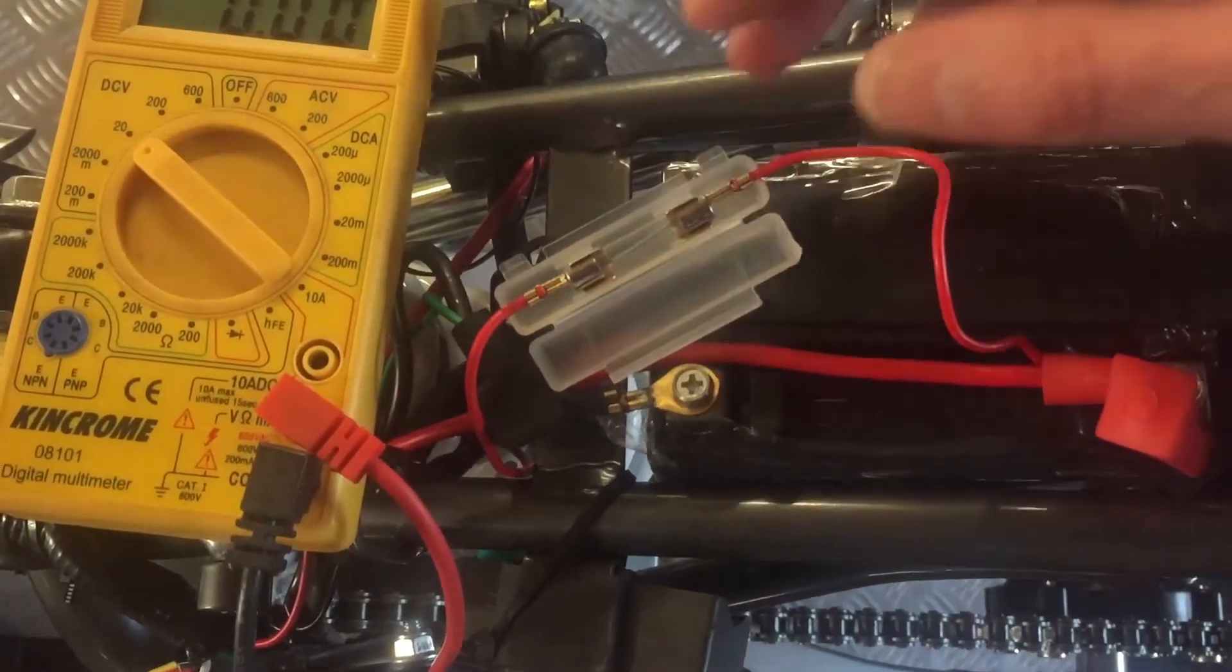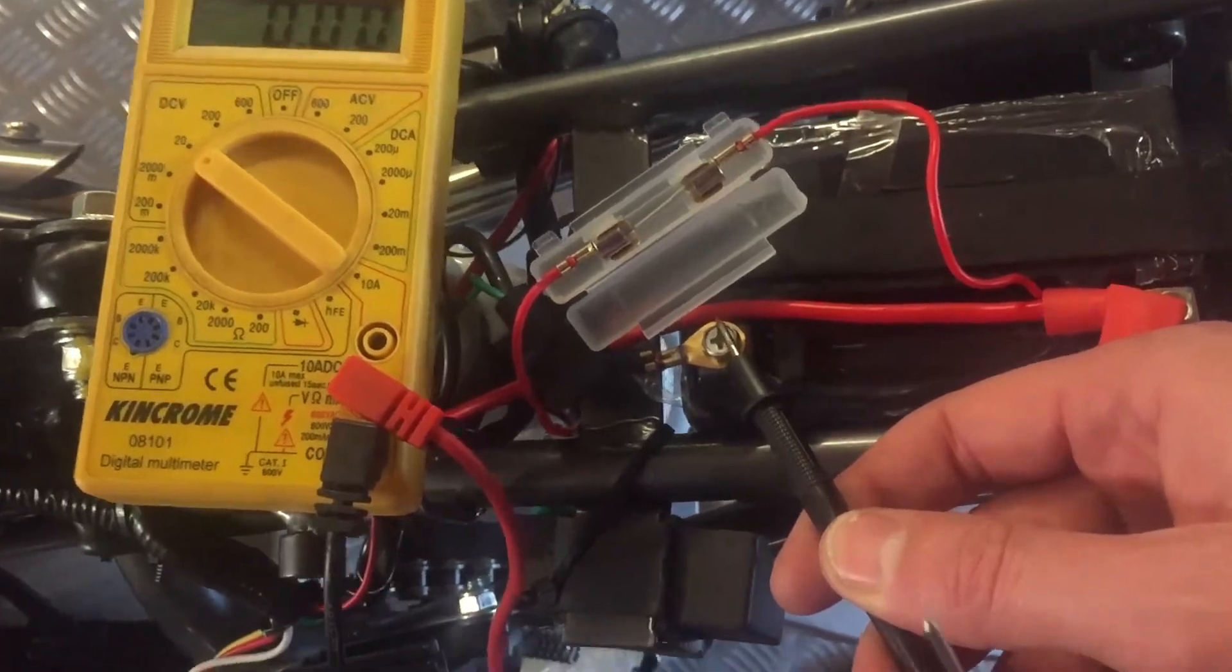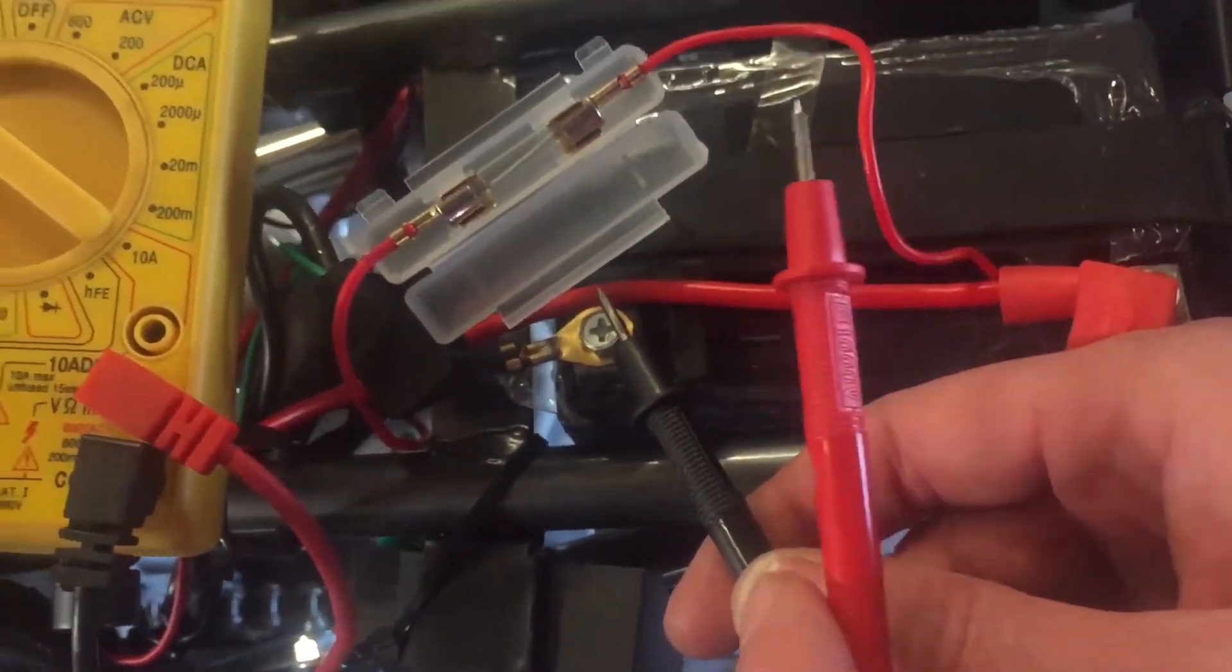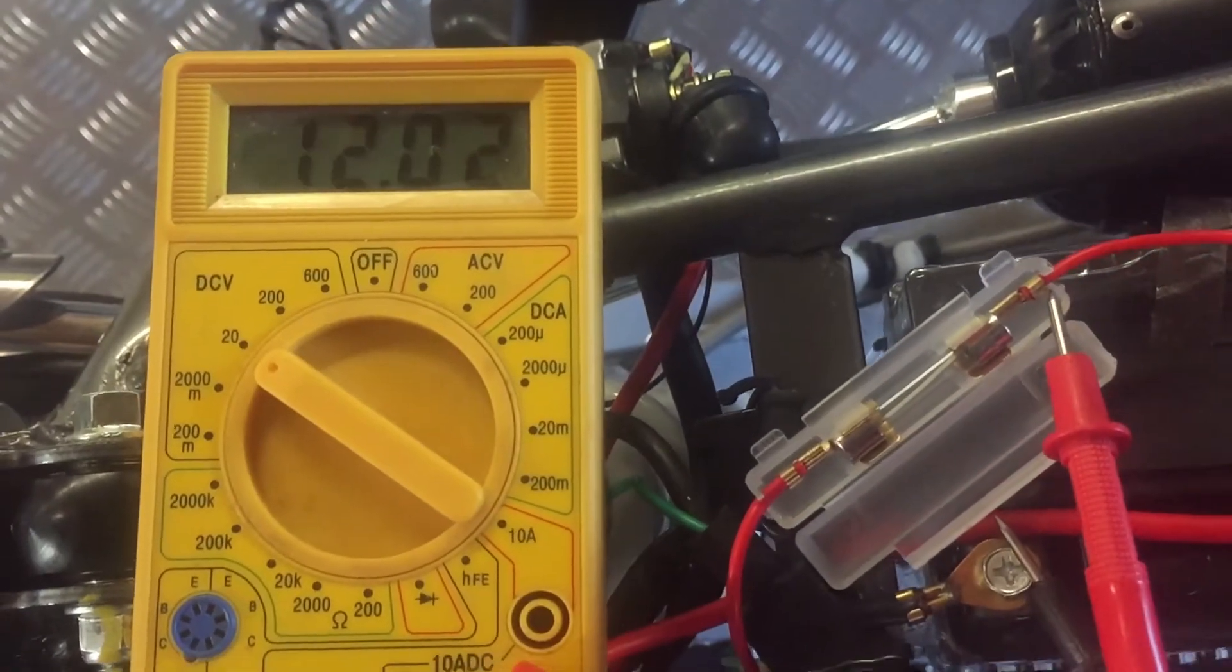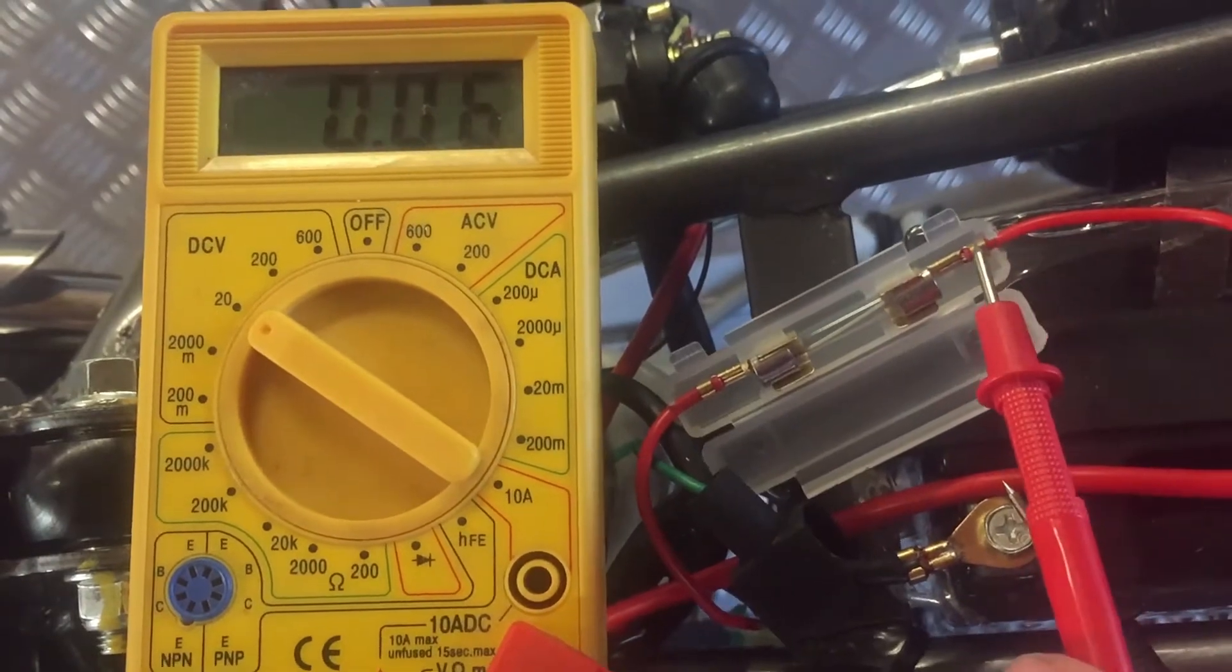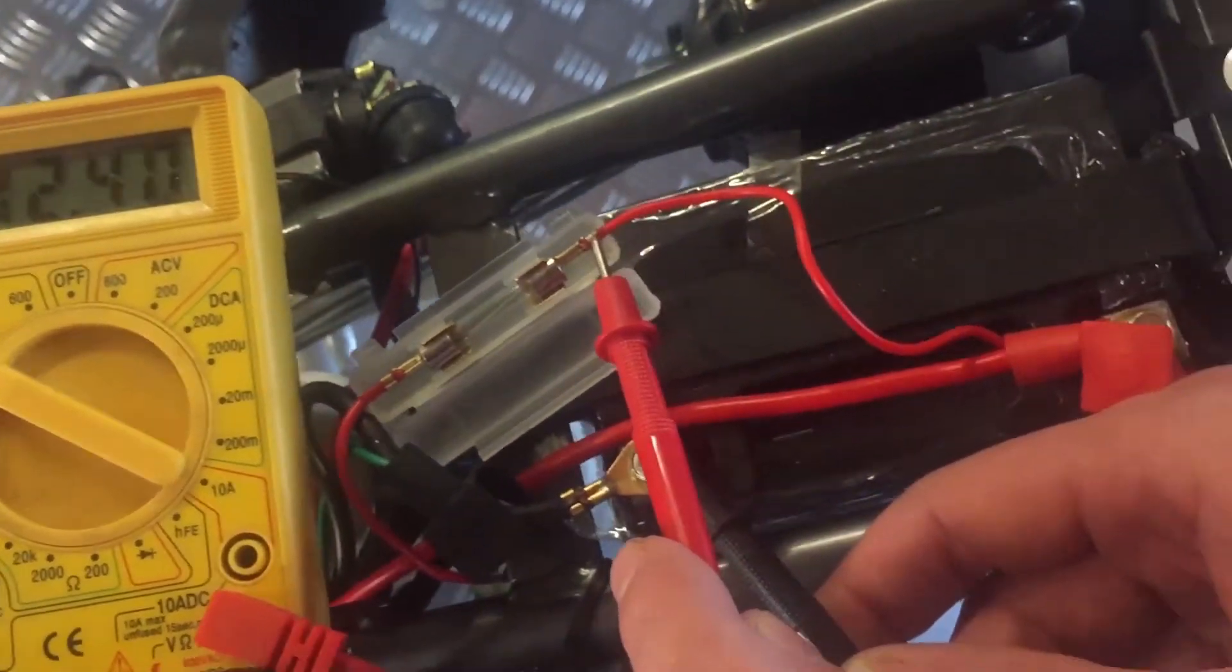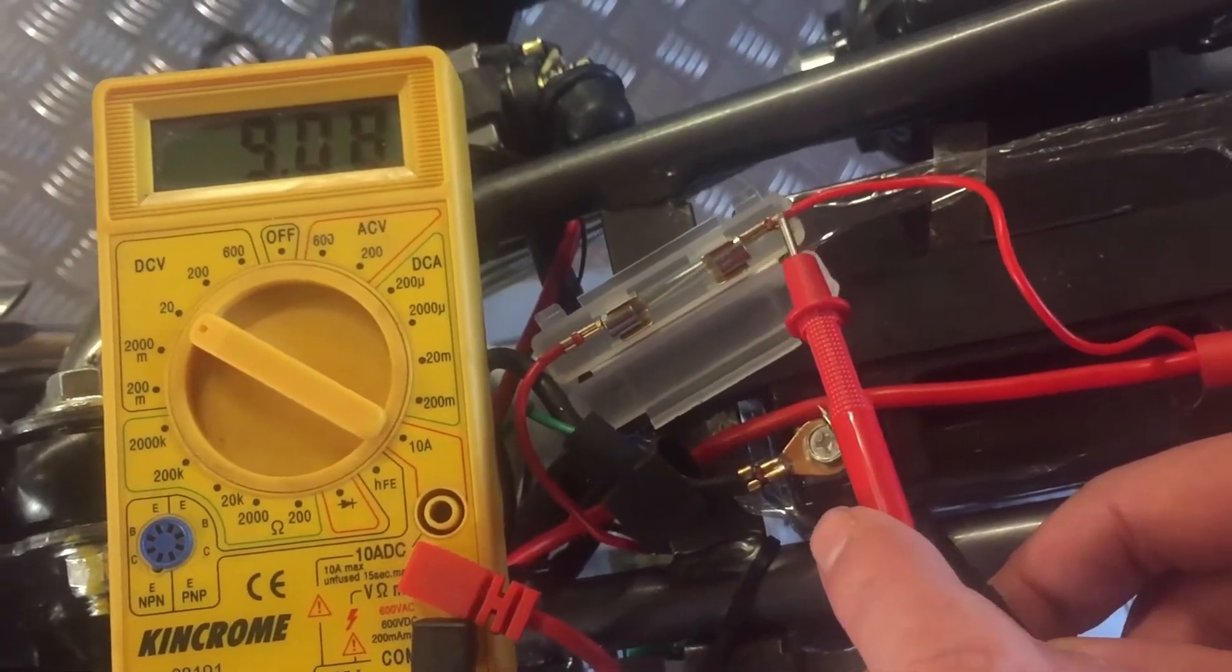I'm just going to put my lead onto negative and then check the wire going into the fuse here. As you can see we've got 12 volts, so that's saying the wire is fine. If that says zero then you could probably say that wire's got a problem.